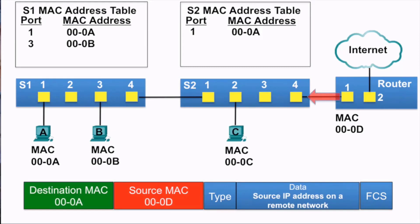The frame is sent to switch S2. S2 receives it and examines the source MAC address, which is not in its MAC address table, so it adds it. It then examines the destination MAC address, which is in its MAC address table, so it forwards the frame out port 1.